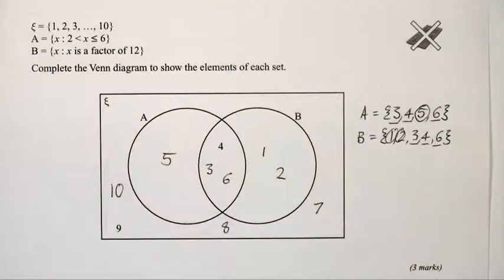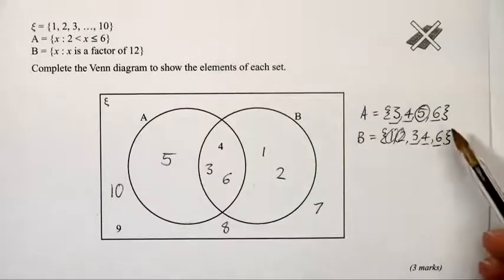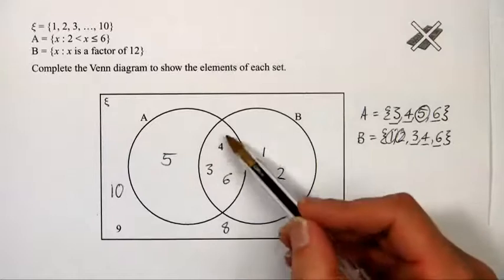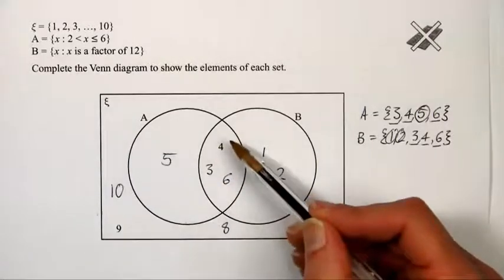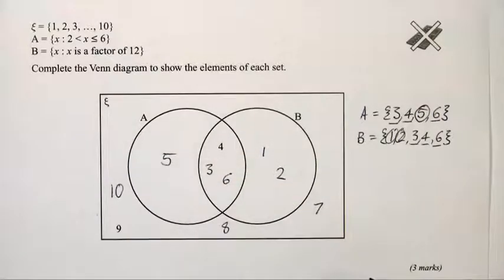That's all the elements, so we're finished. There are 3 marks available: 1 mark for identifying the elements of A and B, 1 mark for the correct elements in the intersection, and 1 mark for filling in the rest of the Venn diagram correctly.